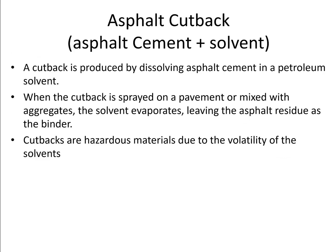Asphalt cutback is produced by dissolving asphalt cement in a petroleum solvent. When the cutback is sprayed on the pavement or mixed with aggregates, the solvent evaporates, leaving the asphalt residue as the binder. In the past, asphalt cutbacks were widely used for highway construction. They were very effective and could be applied easily.